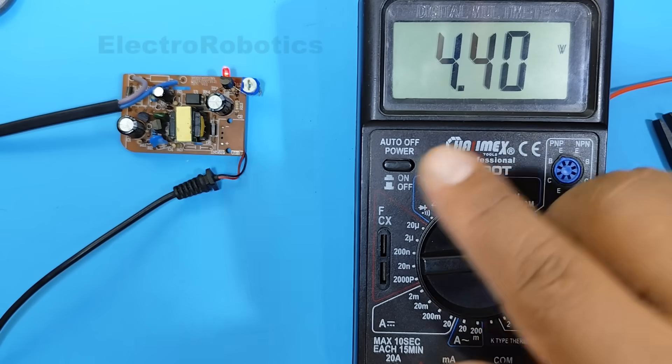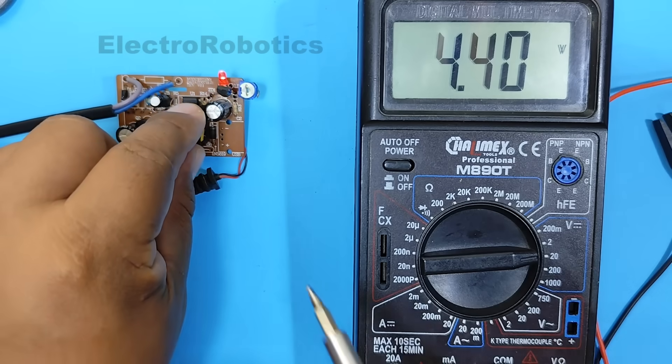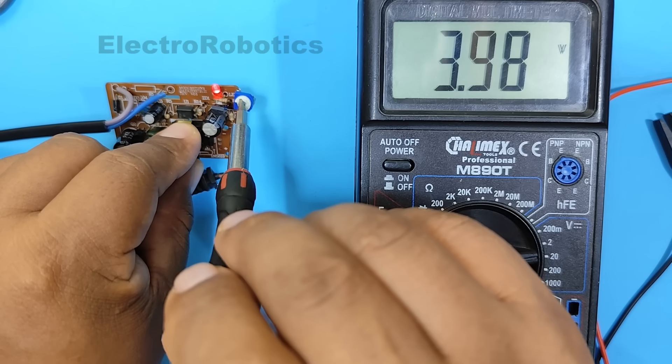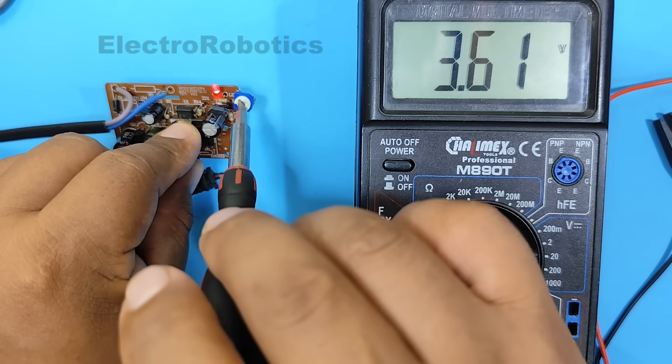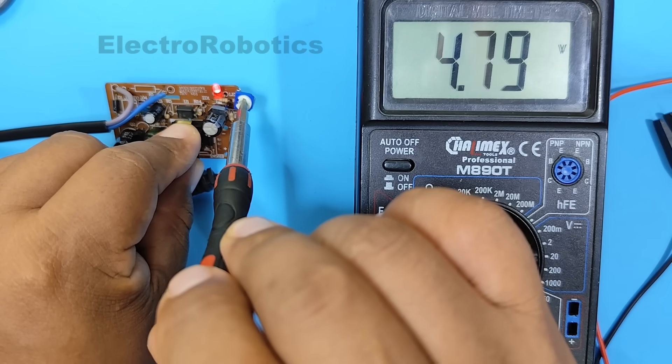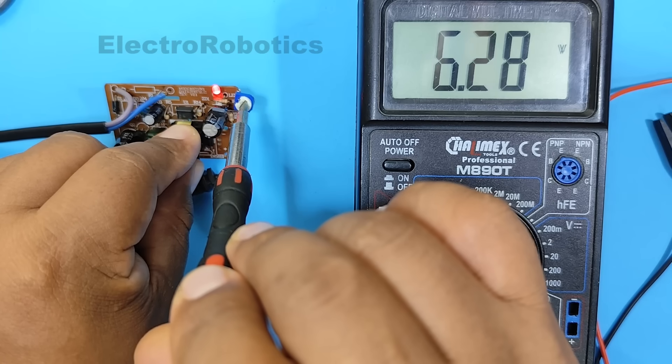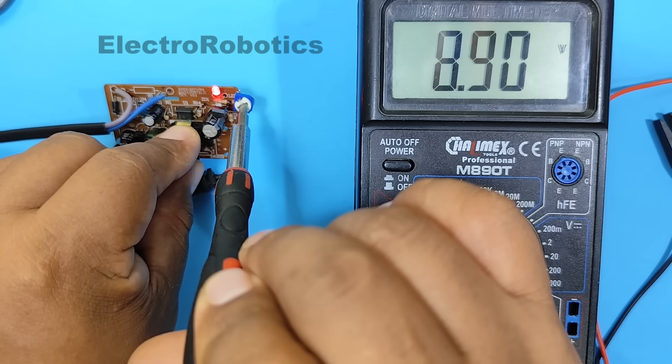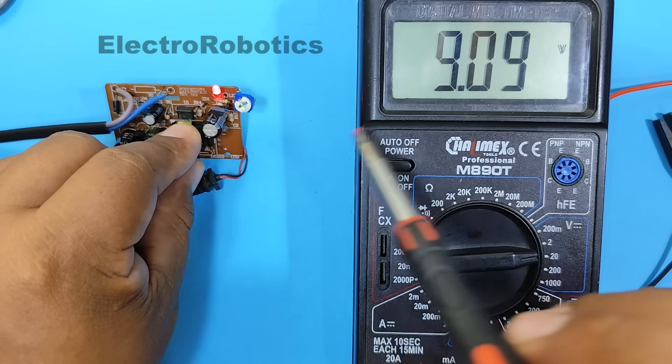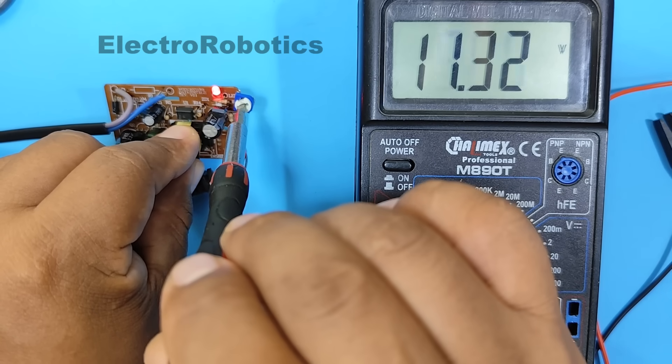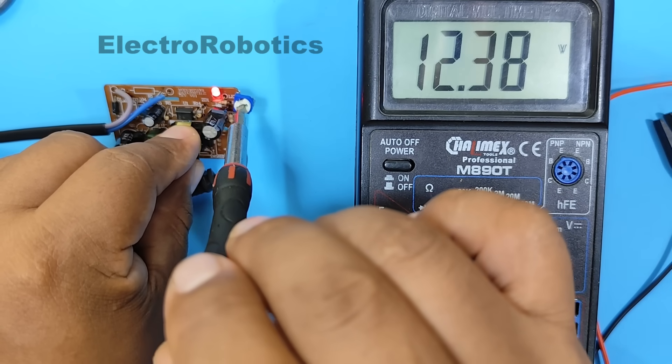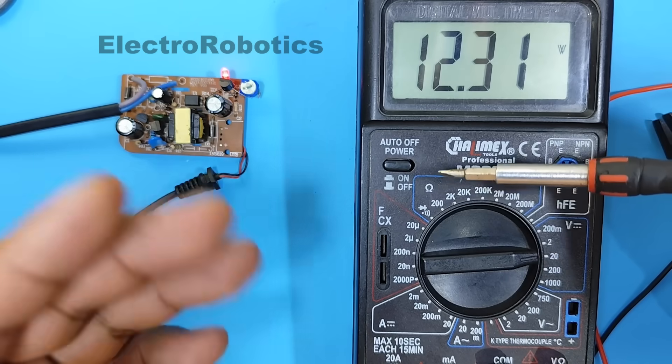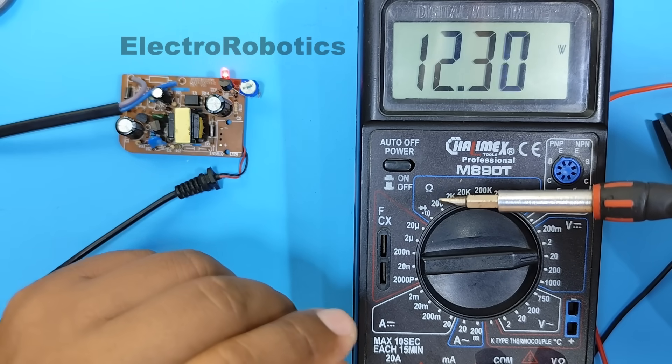There we have 4.3 volts. We're going to vary the voltage. We can lower the voltage, or we can increase the voltage. There we have 9 volts. Now we have 12 volts. This way you can vary the voltage of your cell phone charger or power adapter to use it in different projects.